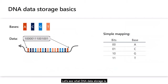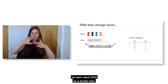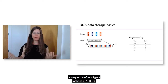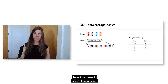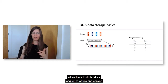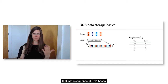Let's see what DNA data storage is. If you think of DNA, we learn about it as that double helix. Each side of that double helix is a sequence of four types of bases: A, C, G, and T. DNA in our genome is essentially a combination of these four bases in different sequences. If we want to store bits in DNA, all we have to do is take a sequence of bits and convert that into a sequence of DNA bases.